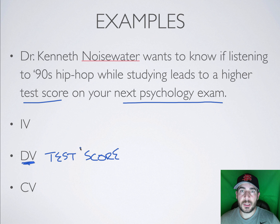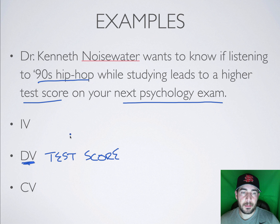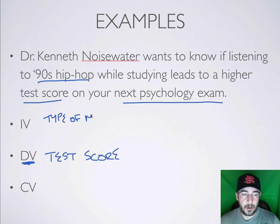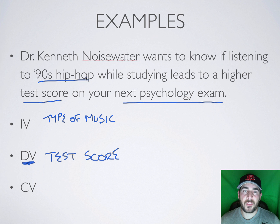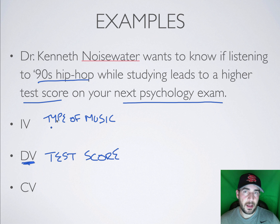What are we going to do to try to change that test score? What's going to be manipulated? 90s hip hop music. So our independent variable is going to be type of music. This isn't a great question as stated — it might be hip hop versus no music, or hip hop versus country music. But the type of music is going to be the independent variable. Depending on what type of music, how does that affect your test score?